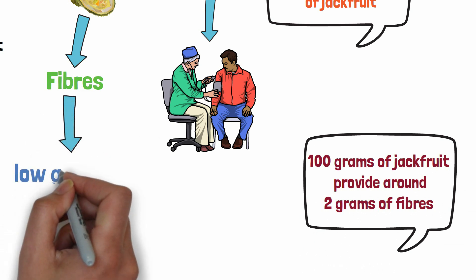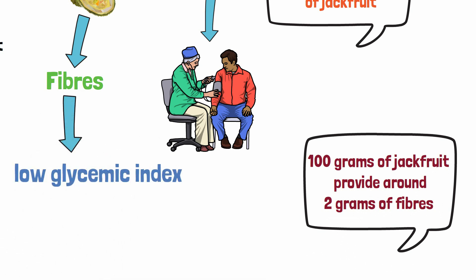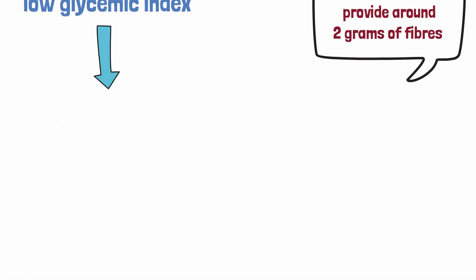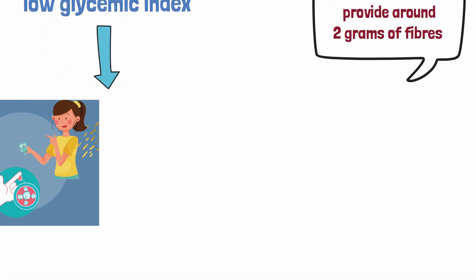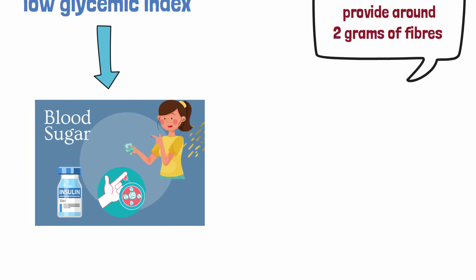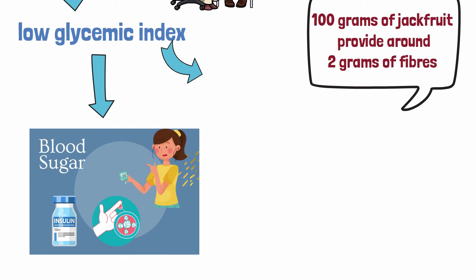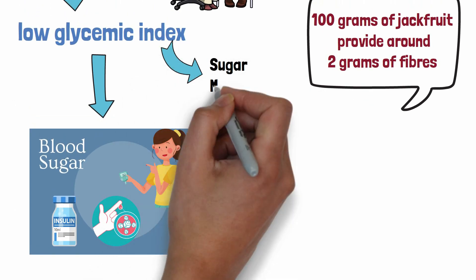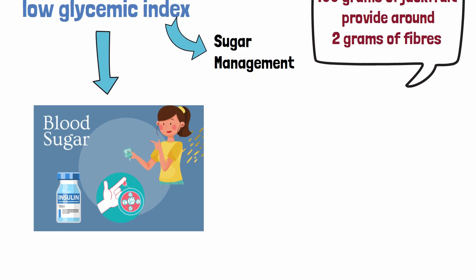Because of containing a very good amount of fiber, it has a very low glycemic index. Glycemic index tells you how rapidly your blood sugar increases after taking a meal. As jackfruit has a very low glycemic index, it helps blood sugar management.